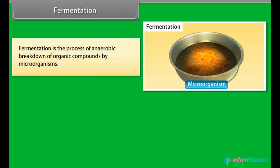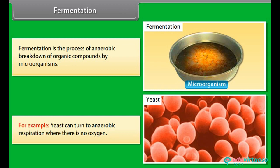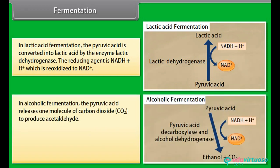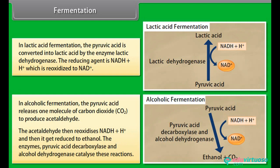Fermentation is the process of anaerobic breakdown of organic compounds by microorganisms. For example, yeast can turn to anaerobic respiration where there is no oxygen. In lactic acid fermentation, the pyruvic acid is converted into lactic acid by the enzyme lactic dehydrogenase. The reducing agent is NADH+H⁺, which is re-oxidized to NAD⁺. In alcoholic fermentation, the pyruvic acid releases one molecule of carbon dioxide to produce acetaldehyde. The acetaldehyde then re-oxidizes NADH+H⁺ and gets reduced to ethanol.